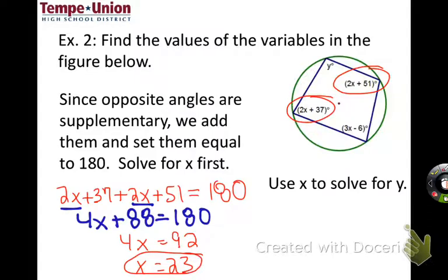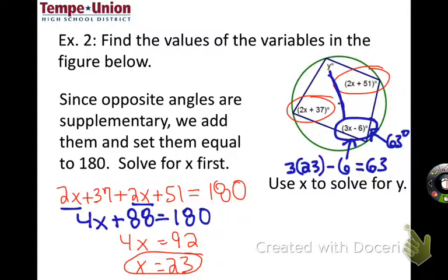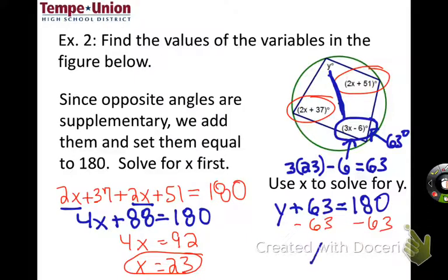So x equals 23. Now let's use that to figure out what y is. We can put the 23 in right there for the x to figure out what that is. That's going to be 3 times 23 minus 6, so 3 times 23 minus 6 would be 63. So that means this angle here is 63 degrees. Now we can add these two opposite angles together and set them equal to 180. Let's do y plus 63 and say that equals 180, then subtract 63 from each side. So y equals 180 minus 63, which is 117.